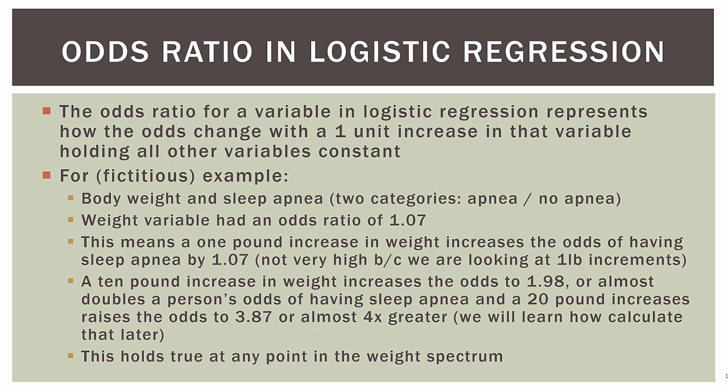The key thing about logistic regression is that this holds true at any point in the weight spectrum. Going from 200 to 201 pounds gives an odds ratio of 1.07, and going from 150 to 151 pounds also gives 1.07. A 10-pound increase from 200 to 210 has the same odds ratio of 1.98 as going from 130 to 140. The odds ratio holds true for any same interval along the weight spectrum, and we'll cover the calculations in future videos.